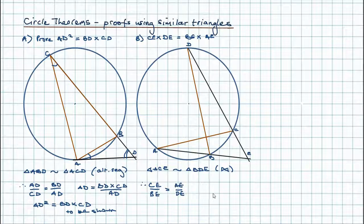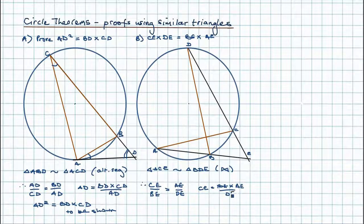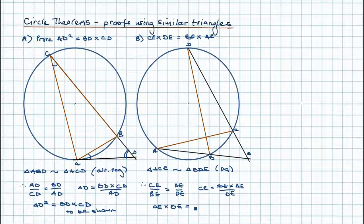Now we can remove the colour tracing paper and move to step three: rearranging the equation. Multiplying both sides by BE cancels it on the left, giving CE equals BE times AE over DE. Then multiplying both sides by DE gives CE times DE on the left, with BE times AE on the right — which is what we set out to prove.